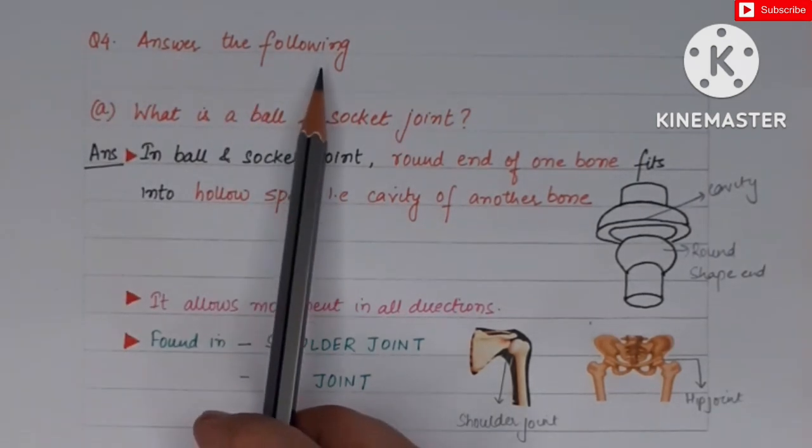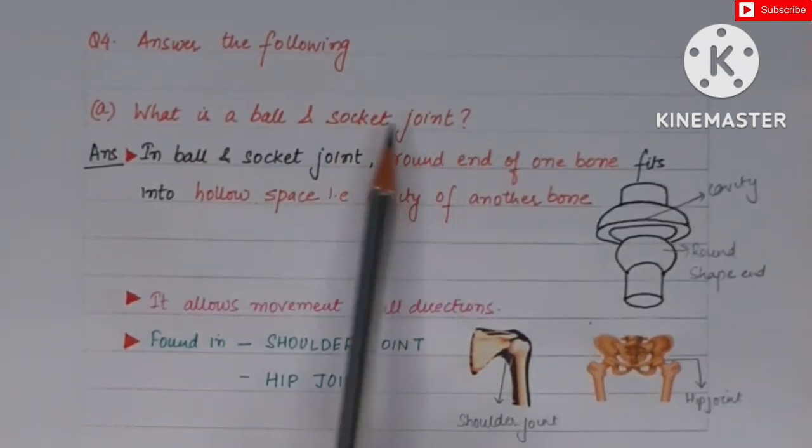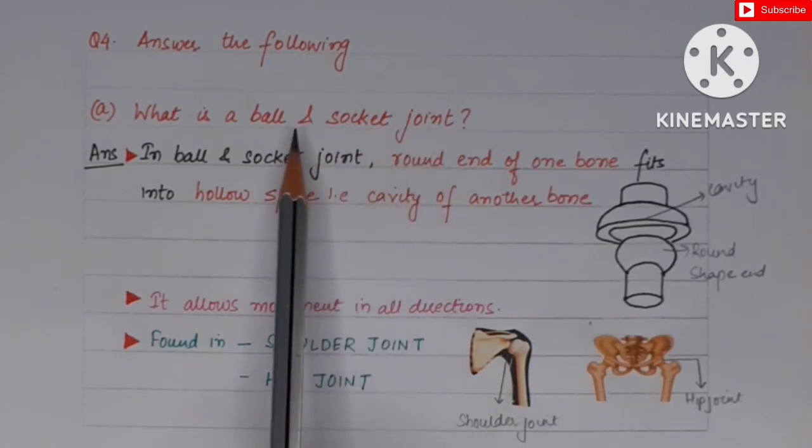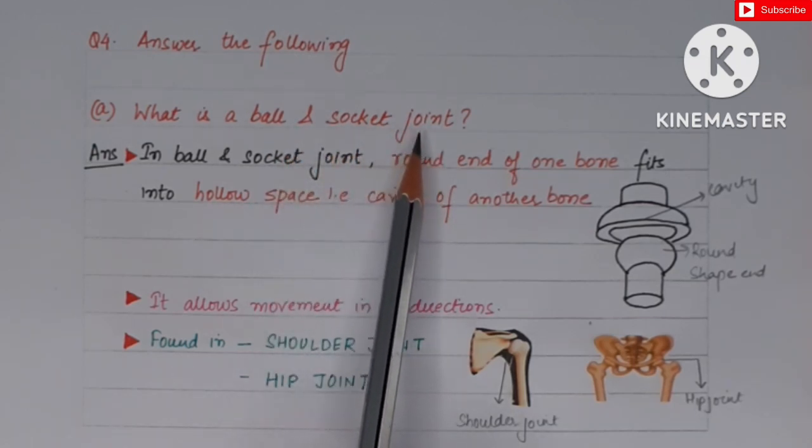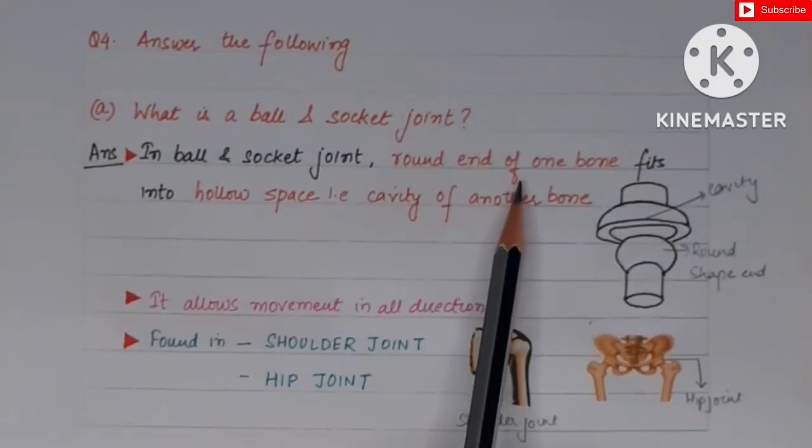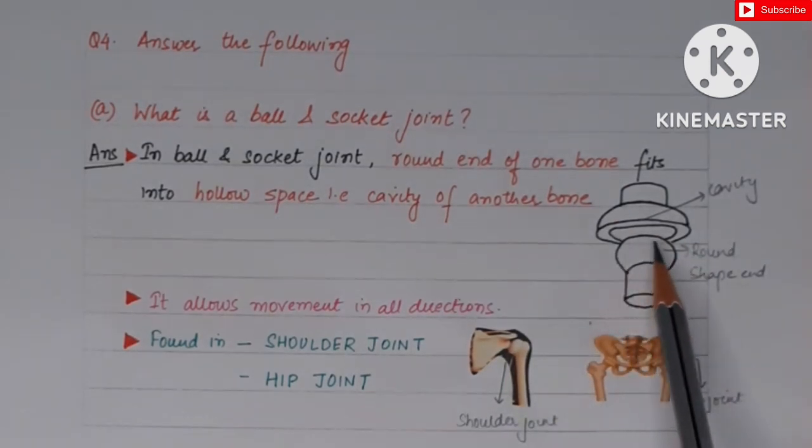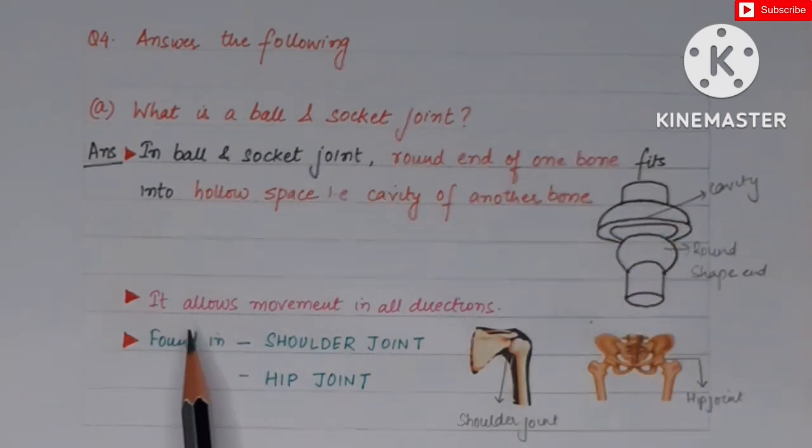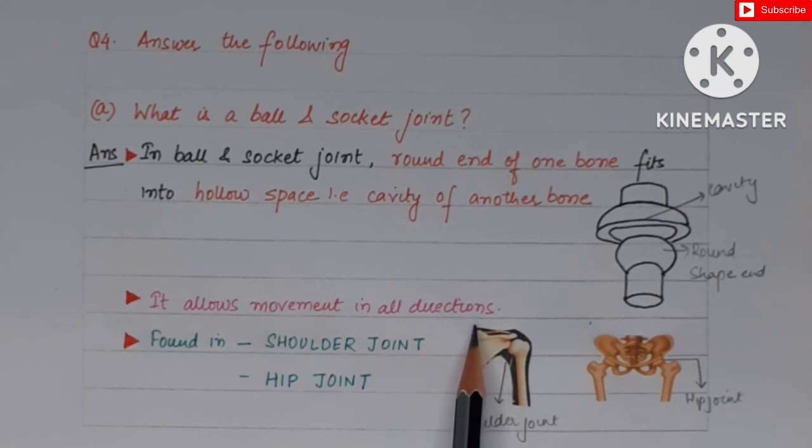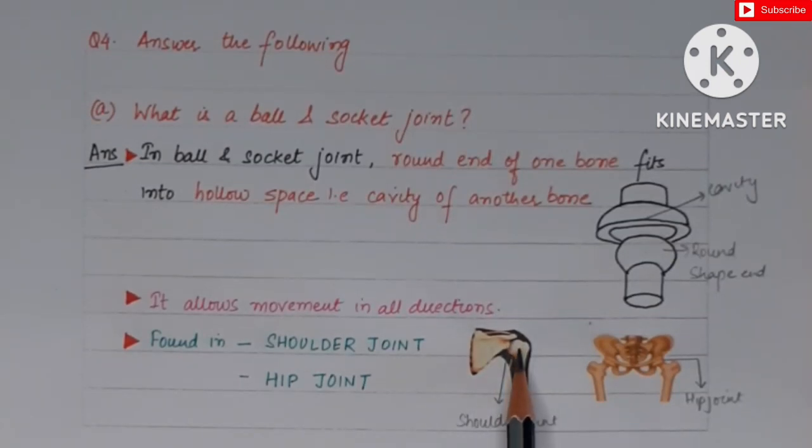Now question number four: answer the following. This question has some sub-parts and we have to answer them. So the first sub-part is: what is ball and socket joint? When we read the chapter, we saw that in ball and socket joint the end of one bone is round shaped and the end of the other bone is in the form of a cavity. So in ball and socket joint, round end of one bone fits into the hollow space, that is the cavity of another bone. So the round shaped end of one bone fits into this cavity which is the end of the other bone. Ball and socket joint, wherever it is present, allows the movement in all the directions. And ball and socket joint is found in the shoulder joint, that is here, joint between the shoulder bone and the upper arm bone, and it is also found in the hip joint, that is the joint between the pelvic bone and the thigh bone.